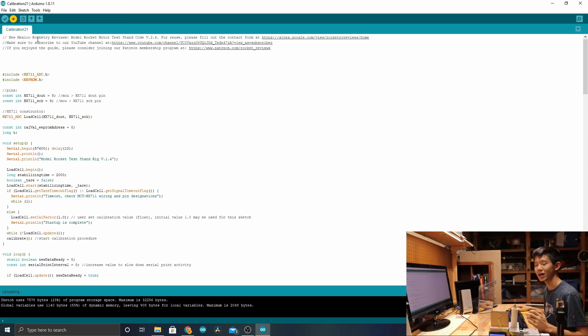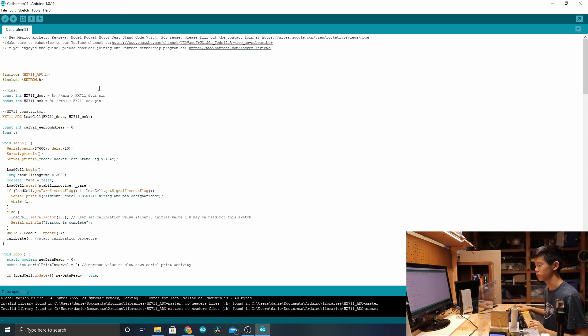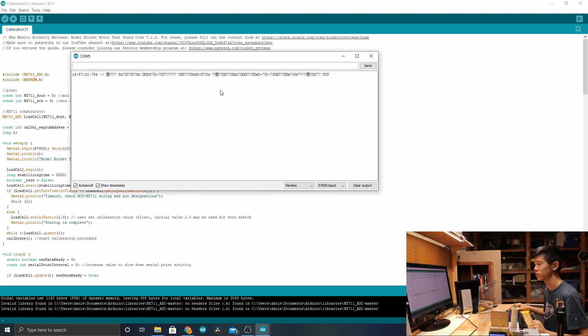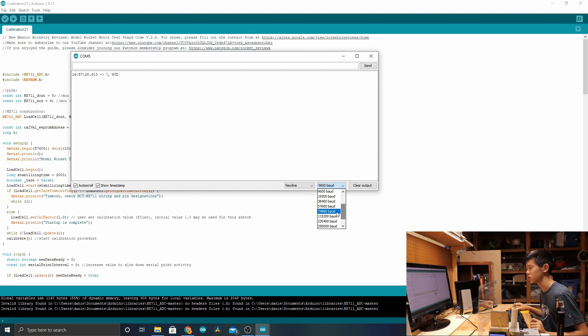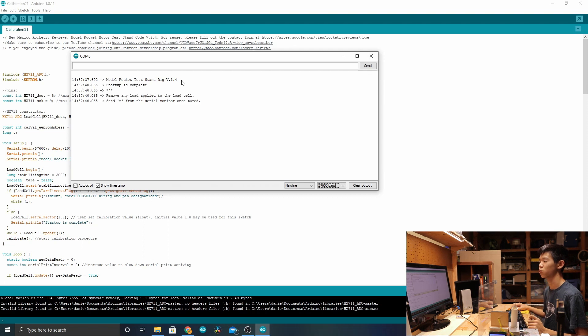If there is an error with uploading, try selecting a different serial port. Now that it's done uploading, press CTRL-SHIFT-M or CMD-SHIFT-M to open the serial monitor. The default, if you just got the Arduino IDE, will be 9600 baud. You're going to want to change that to 57600 baud. Now it will say model rocket test stand version 1.4. Now we're going to calibrate it. First set the test stand on a nice stable surface and make sure no load is applied. Now select T to tare.